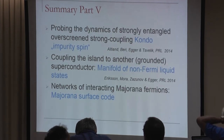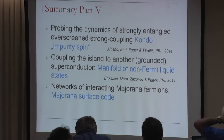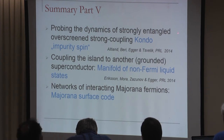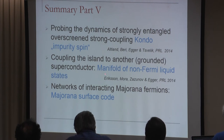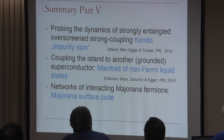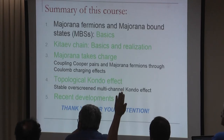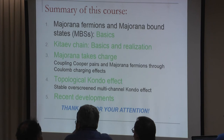In summary, the last part discussed three recent developments: Majorana spin dynamics near the strong coupling Kondo fixed point; the manifold of non-Fermi liquid states arising when coupled to another superconductor; and Majorana surface codes based on networks of interacting Majorana fermions. Thank you for your attention.